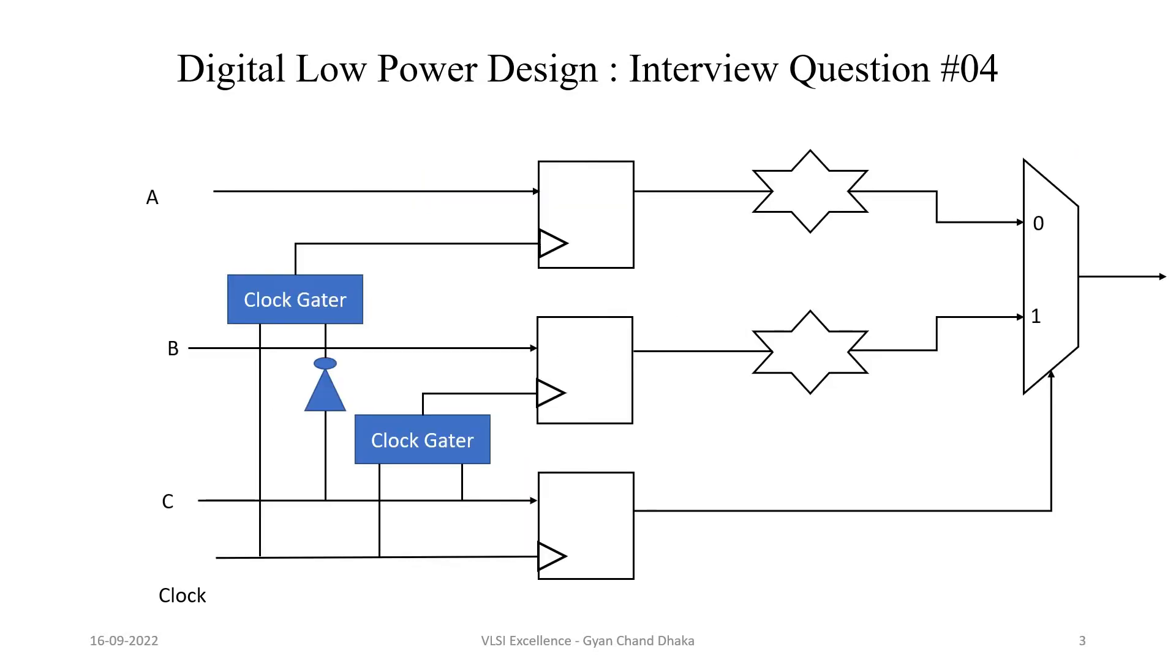So friends, here is the modified circuit diagram and now let's see the functionality of this circuit. As discussed, this is our flip-flop 1, this is our flip-flop 2, and this is our flip-flop 3. So now let's see both cases when the output of flip-flop 3 is 0 and 1.